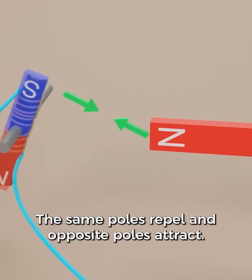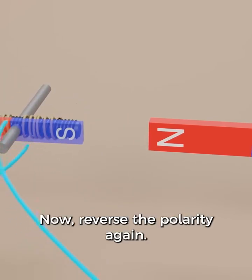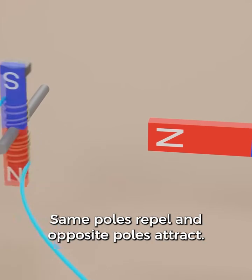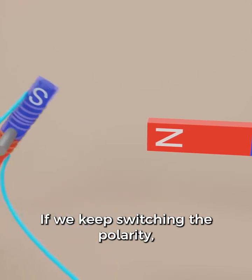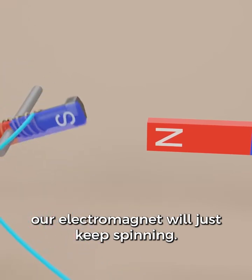The same poles repel, and opposite poles attract. Now reverse the polarity again. Same poles repel, and opposite poles attract. If we keep switching the polarity, our electromagnet will just keep spinning.